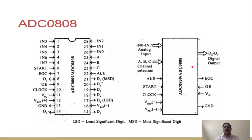On the output side you will find the digital output D0 to D7. D0 is the least significant digit and D7 is the most significant digit. There is an End of Conversion output signal — whenever the ADC finishes conversion, this signal automatically goes high. There is also an Output Enable signal used to read the digital output available on data lines D0 to D7. VCC and ground are the power supply connections.